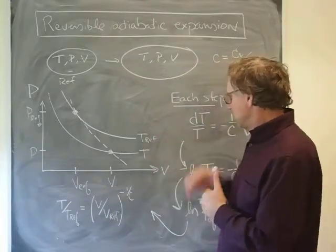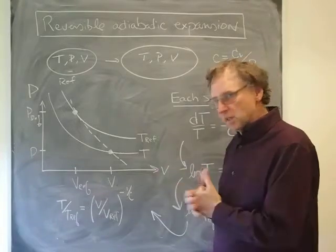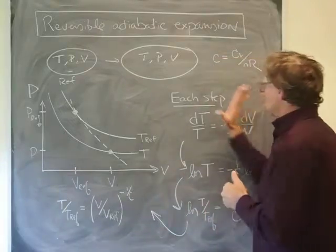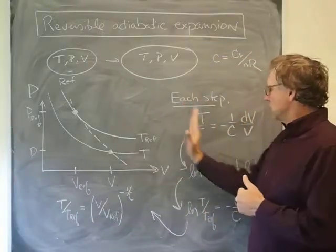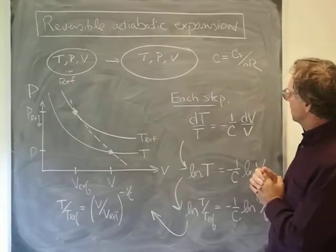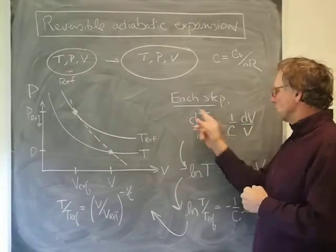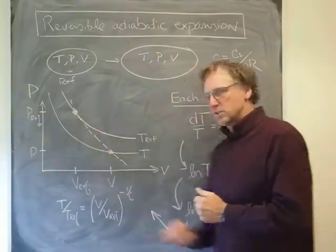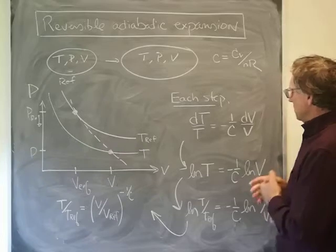So how do we go about this? I'm assuming we're starting off with this equation that we previously obtained. It goes something like this: the relative change in the temperature for a small step along this way, dT over T, would be equal to one over c, that reduced heat capacity, times the relative change in the volume.